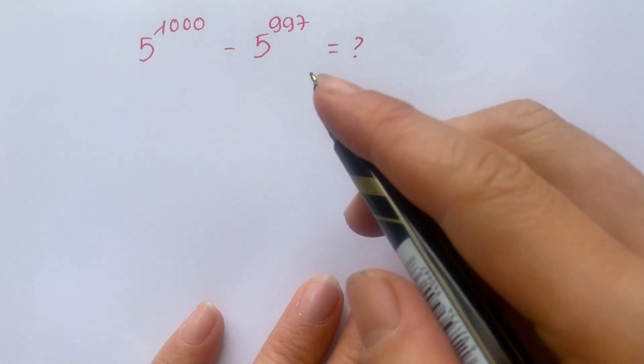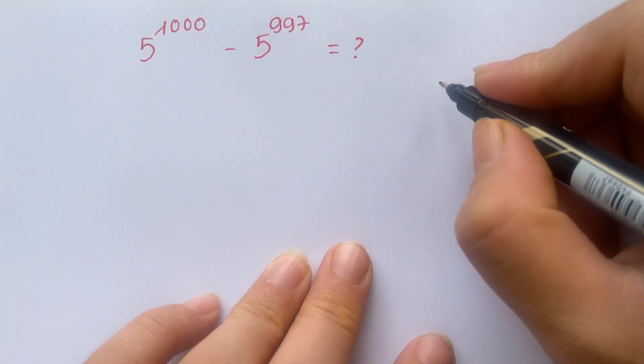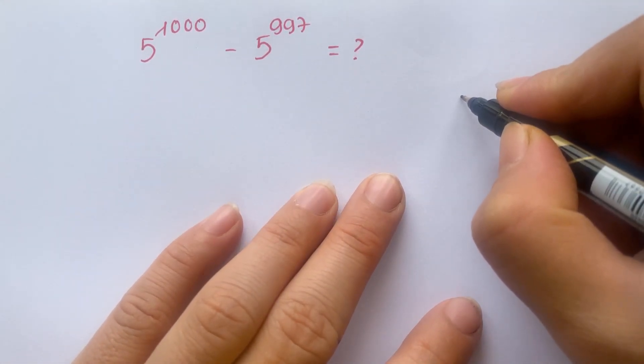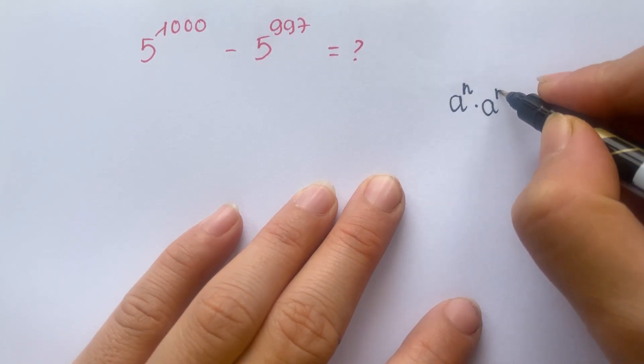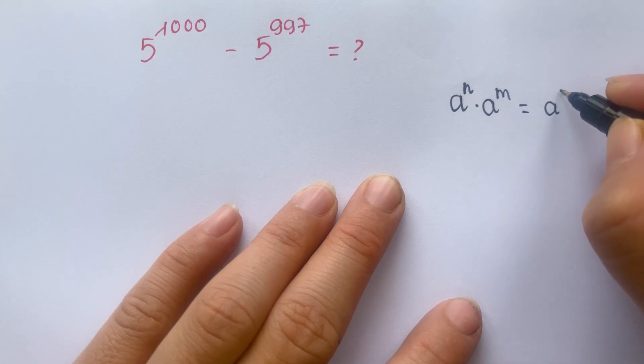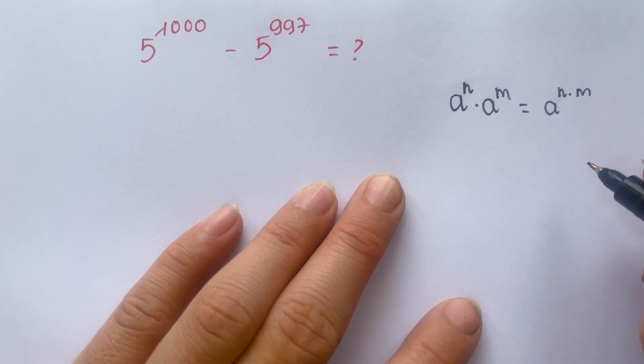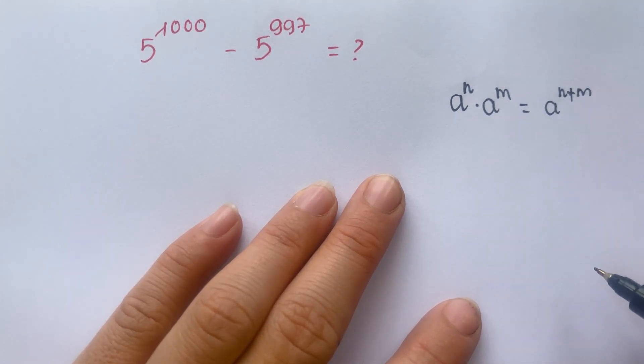we just only apply only one exponential rule, like a power n times a power m equals a power n plus m, yes?